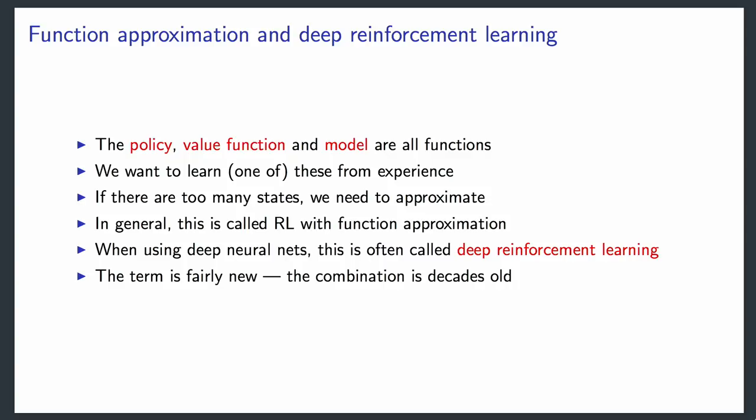What we want to do is learn these functions from experience. If there are too many states—which is often the case—we will need to approximate. In general, this is called reinforcement learning with function approximation. When you use deep neural networks, people typically refer to this as deep reinforcement learning, merging the terms deep learning and reinforcement learning.